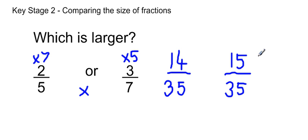And there we have two fractions that we can compare. You can only really compare fractions when you have the same denominator. And in this case, two-fifths equals fourteen thirty-fifths, but three-sevenths is slightly larger because it's fifteen thirty-fifths. So the largest one is three-sevenths.